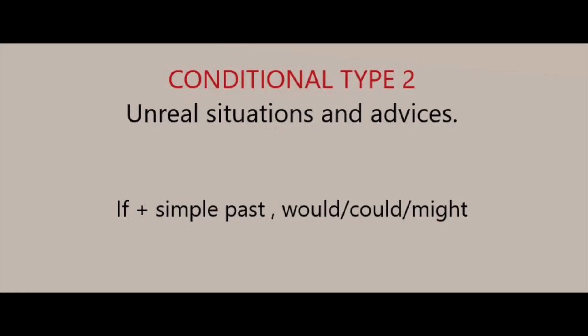Vamos a comenzar a estudiar el condicional tipo 2. Punto número uno y muy importante: el condicional tipo 2 habla de situaciones no reales — en inglés, 'unreal situations' — y también sirve para dar consejos. ¿Cómo funciona? Utilizamos la cláusula 'if' con un pasado simple — en afirmación, negación o pregunta — y la cláusula independiente usa los auxiliares 'would', 'could' o 'might'. Lo más común es 'would', que le da al verbo la terminación '-ría'. 'Could' y 'might' equivalen a 'podría'.